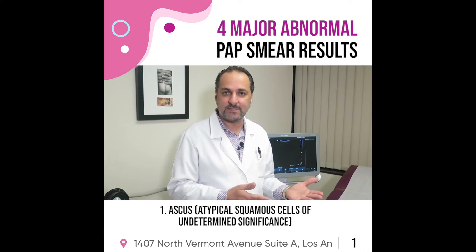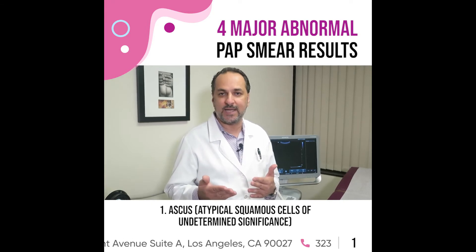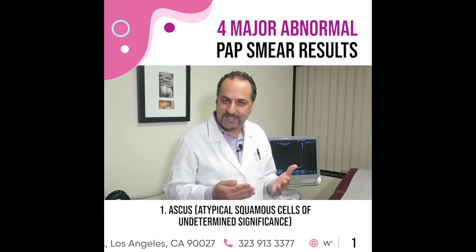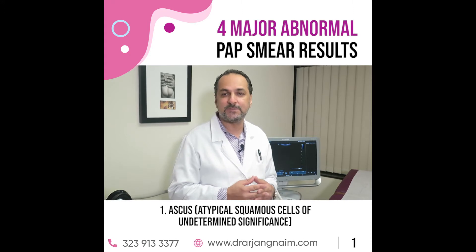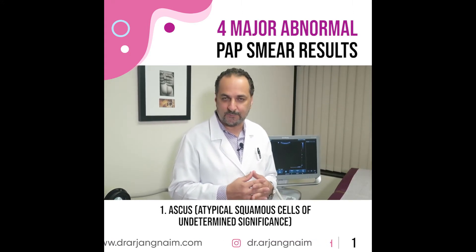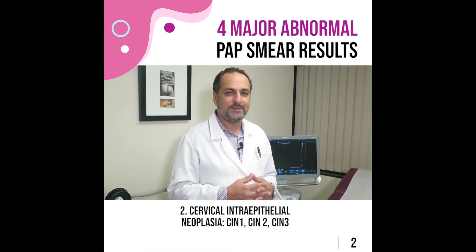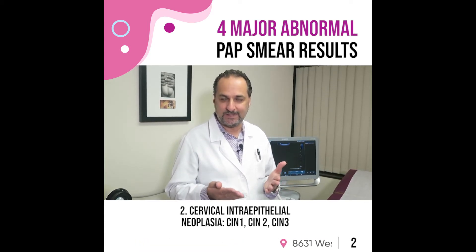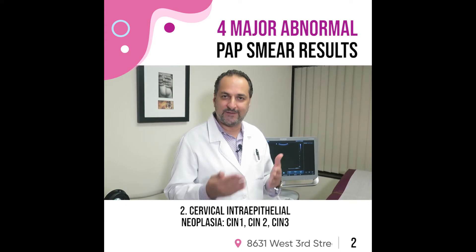If somebody has this abnormal pap smear result, ASCUS, we usually do HPV tests to check for the HPV virus. If it's negative, no further management is necessary. If it's positive, then we go further and do something called a colposcopy, which is a biopsy of the cervix.